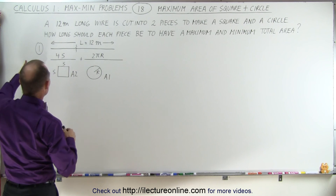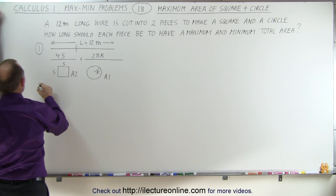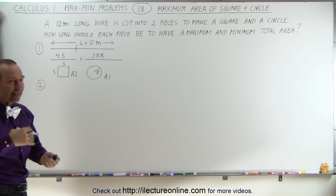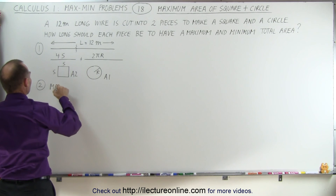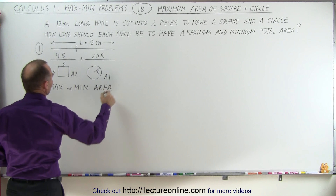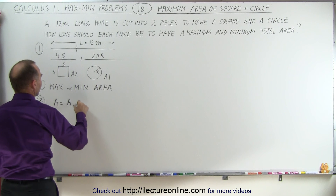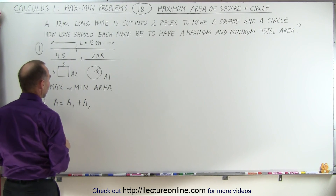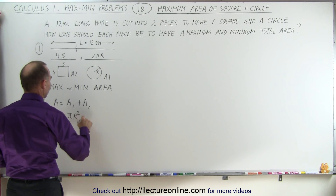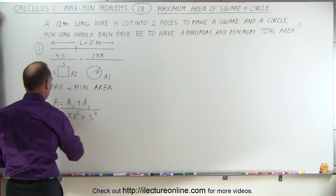The next thing we're going to do is determine what's going to be maximized or minimized. In this case, we're going to both maximize and minimize the area of the two figures. We need an equation — the area is going to be the sum of the area of the circle plus the area of the square. The area of the circle is πr², and the area of the square is s².